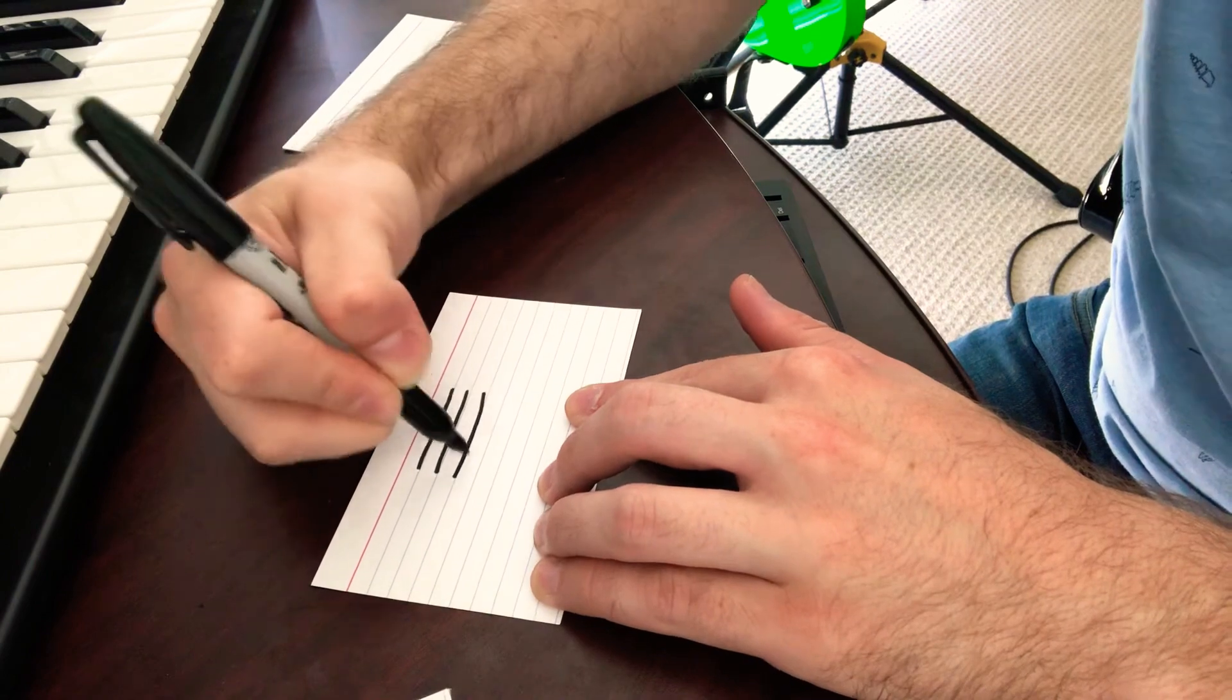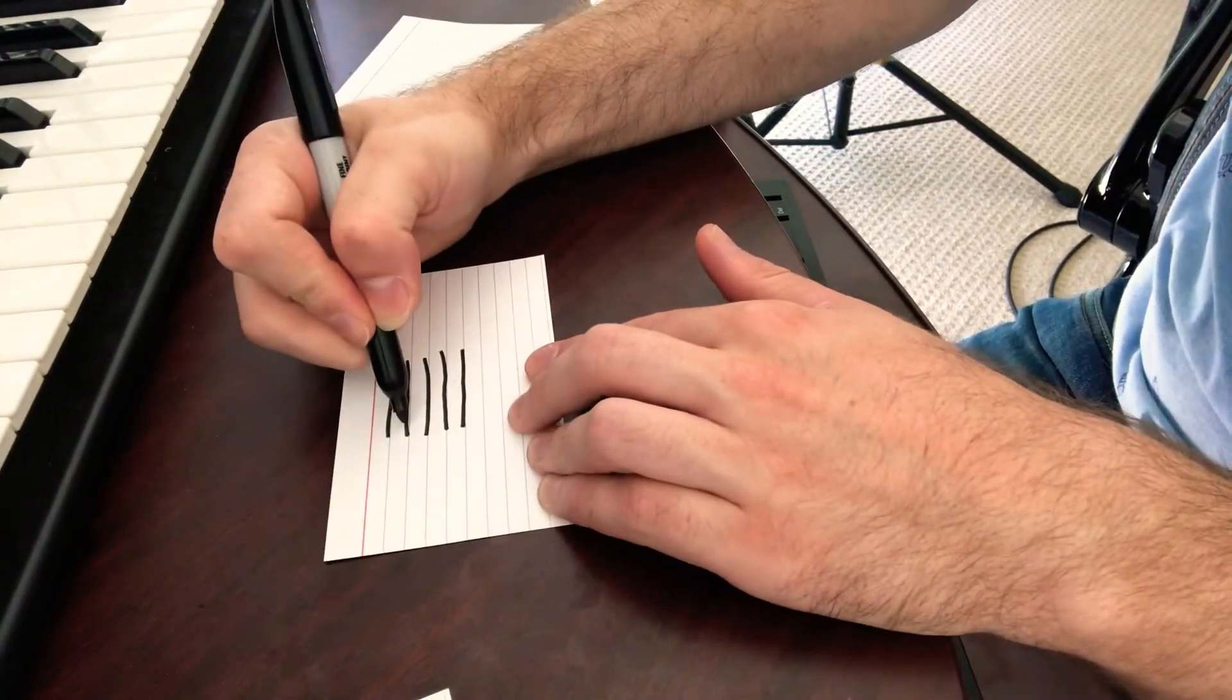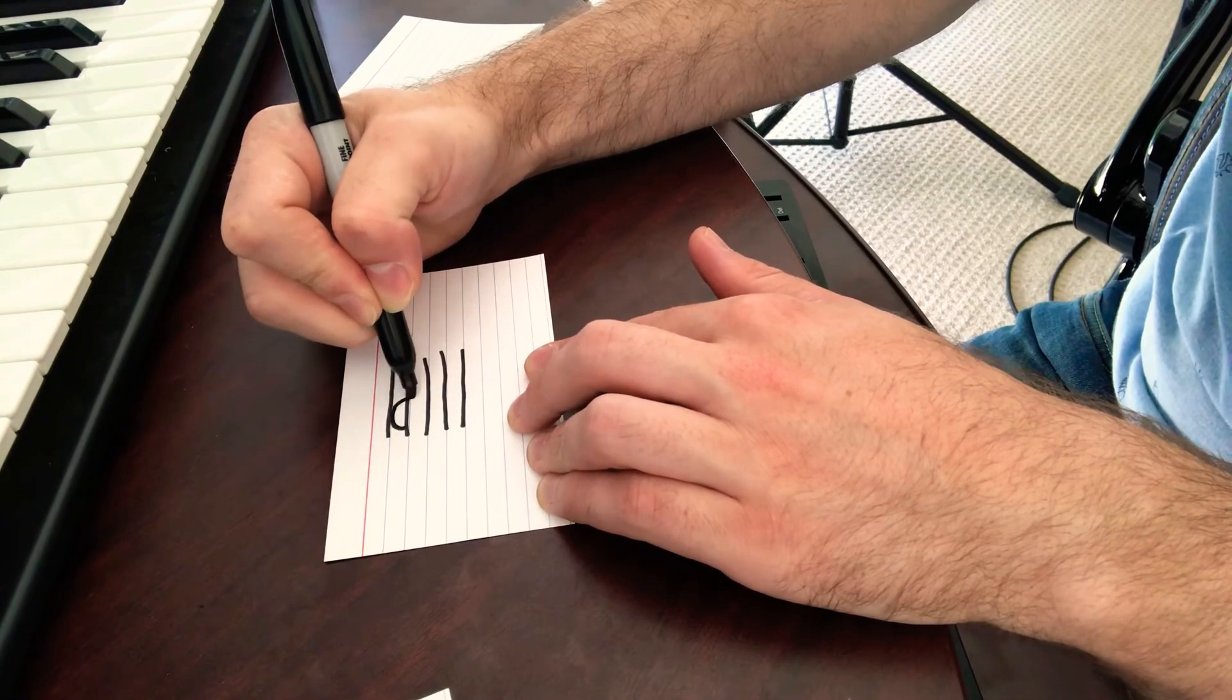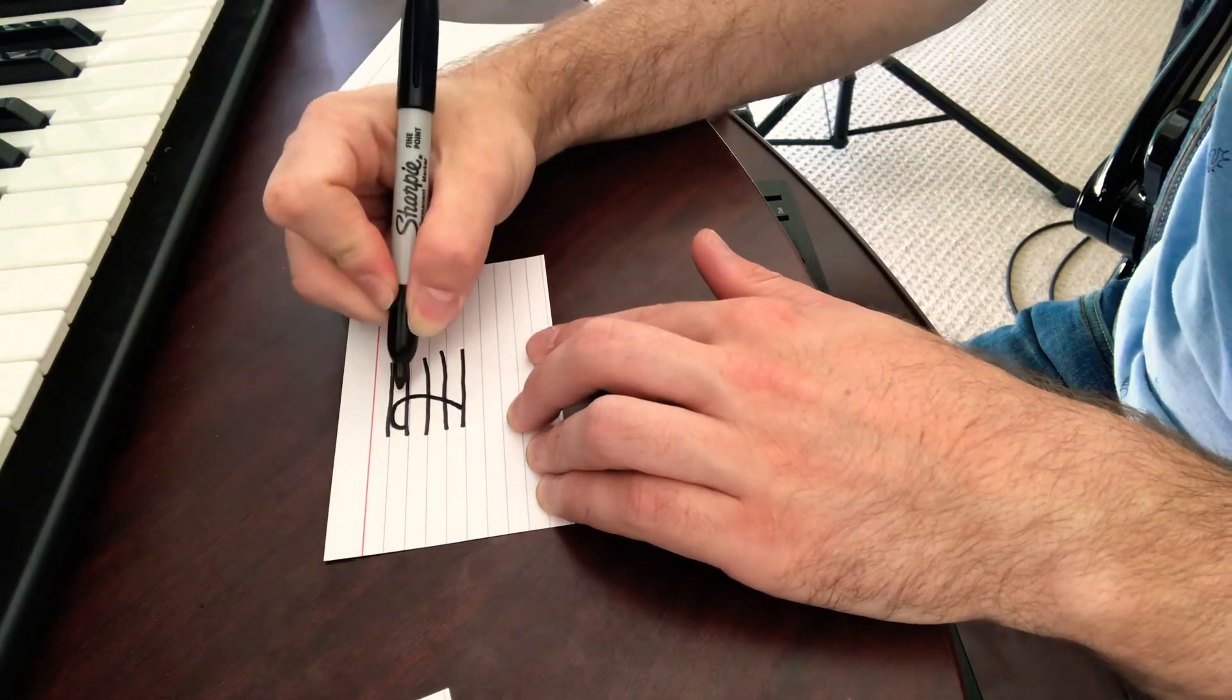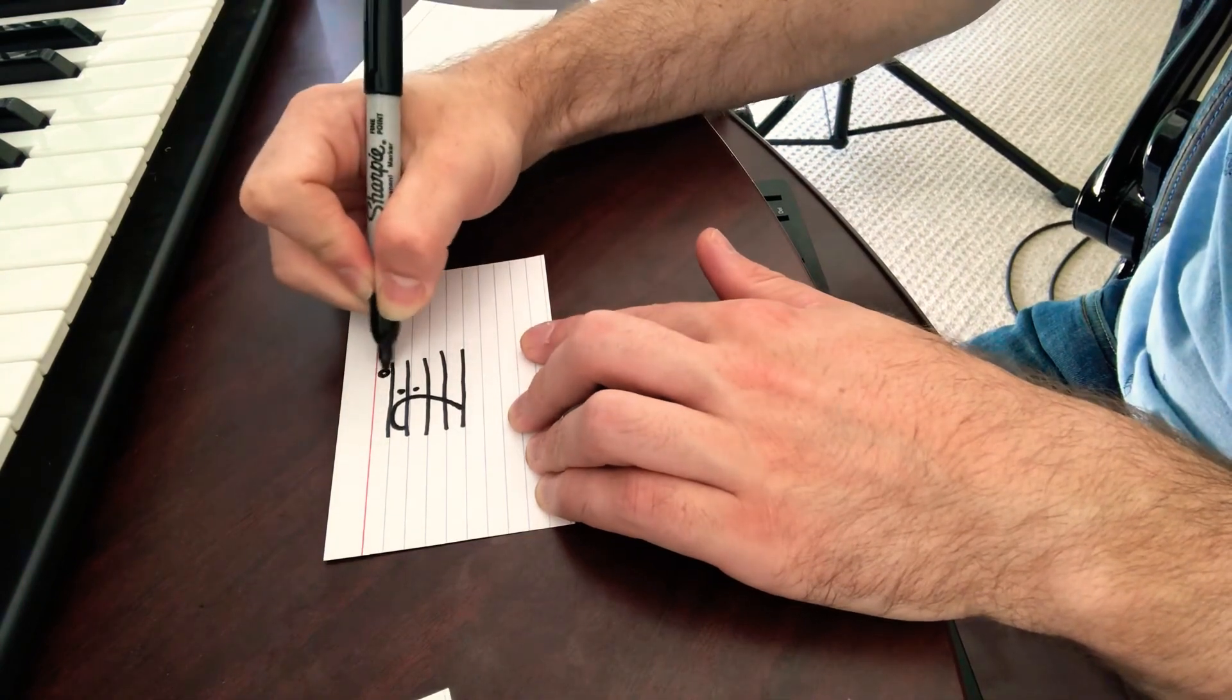And you can even do your bass clef, which I'm not as good at, but I'll try to make one here. So here's my F clef. And then around the F, I will make two dots, and I'm going to do the same process. I'll make a note up here.